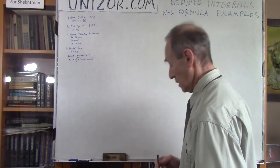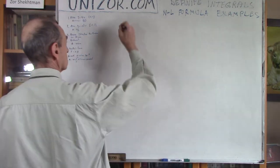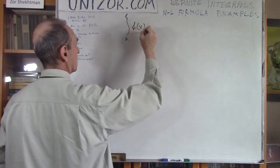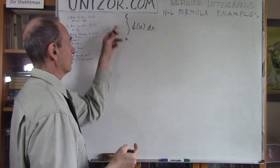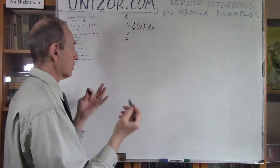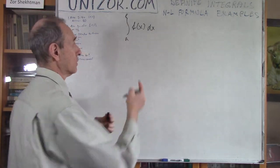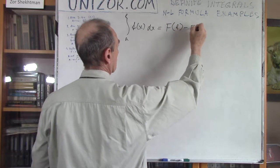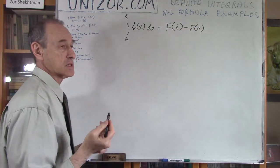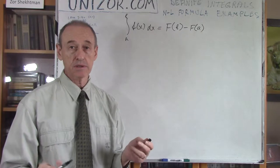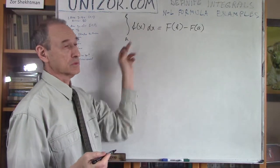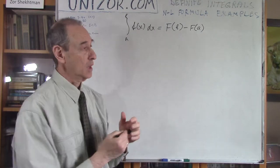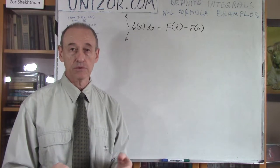First of all, let me remind you of the Newton-Leibniz formula. If you want to find the value of the definite integral of function f(x) on the segment from a to b, which you can always consider as an area under the curve representing the graph of the function, this is equal to F(b) minus F(a), where capital F is any indefinite integral or anti-derivative of the function lowercase f. I derived this formula in the previous lecture, and today I'm going to use it for a couple of concrete examples.